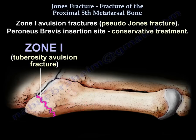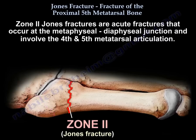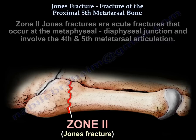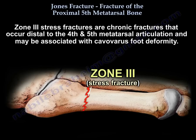Zone 1 is an avulsion fracture, called pseudo Jones fracture, at the peroneus brevis insertion site, and is treated conservatively. Zone 2 is the true Jones fracture — acute fractures that occur at the metaphyseal-diaphyseal junction and involve the 4th and 5th metatarsal articulation. Zone 3 stress fractures are chronic fractures that occur distal to the 4th and 5th metatarsal articulation and may be associated with cavovarus foot deformity.